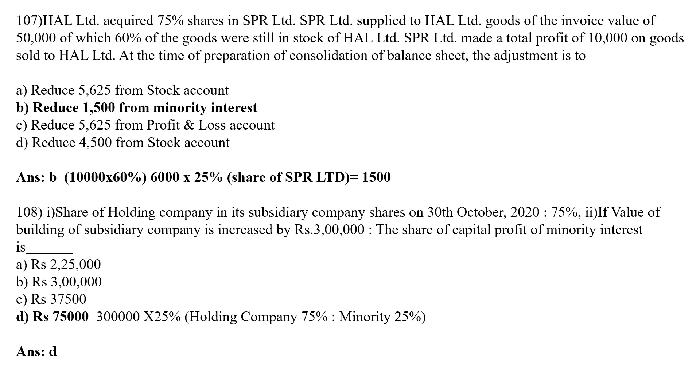Working: 10,000 × 60% = 6,000 (unrealised profit in stock). Minority interest is 25%, so 25% of 6,000 = 1,500. Therefore, 1,500 will be reduced from minority interest.